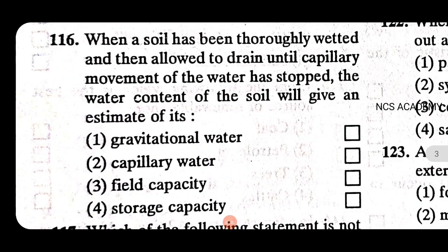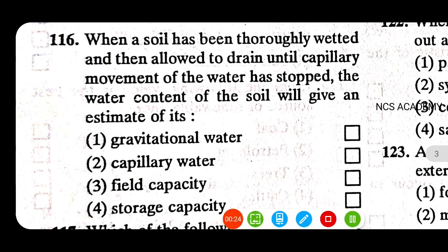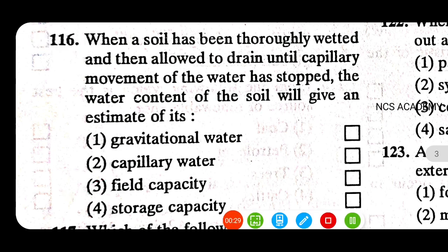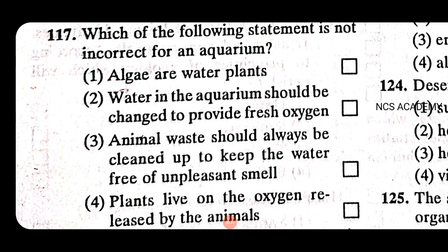Hello everyone, welcome to NCS Academy. Some important questions from ecology. When a soil has been thoroughly wetted and then allowed to drain until capillary movement of water has stopped, the water content of the soil will give an estimate of its field capacity. The right answer is field capacity — option three.